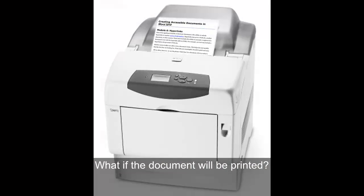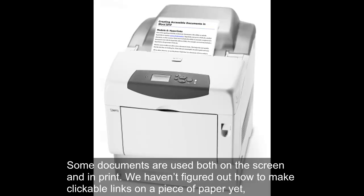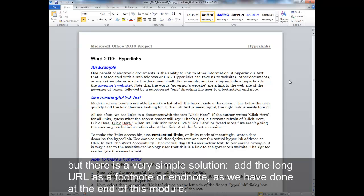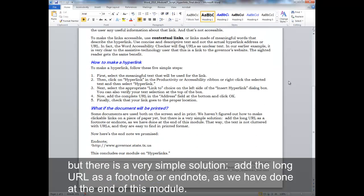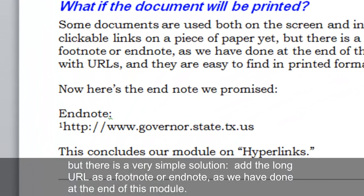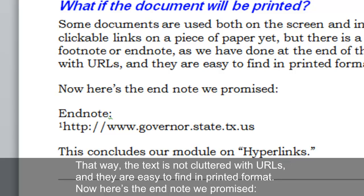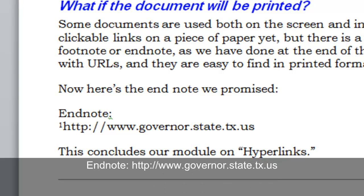What if the document will be printed? Some documents are used both on the screen and in print. We haven't figured out how to make clickable links on a piece of paper yet, but there is a very simple solution. Add the long URL as a footnote or endnote, as we have done at the end of this module. That way, the text is not cluttered with URLs and they are easy to find in printed format. Here's the endnote we promised. Endnote 1: http://www.governor.state.tx.us